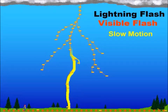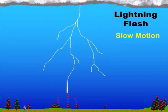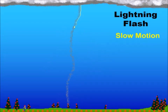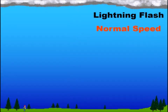Once the connection is made, a very bright and powerful return stroke illuminates the lightning channel. The initial return stroke may be followed by dart leaders and additional return strokes, causing the lightning to flicker. And all of this, from start to finish, happens in just a very small fraction of a second.